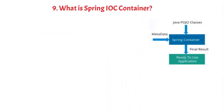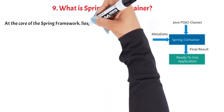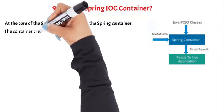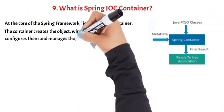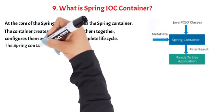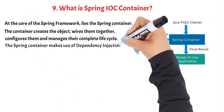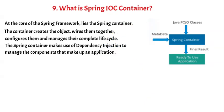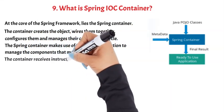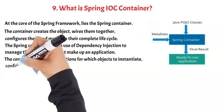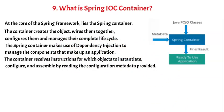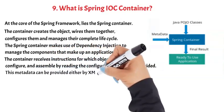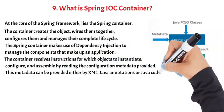Question 9: What is Spring IOC Container? At the core of the Spring Framework lies the Spring Container. The container creates objects, wires them together, configures them, and manages their complete life cycle. The Spring Container makes use of dependency injection to manage the components that make up an application. The container receives instructions for which objects to instantiate, configure, and assemble by reading the configuration metadata provided. This metadata can be provided either by XML, Java annotations, or Java code.